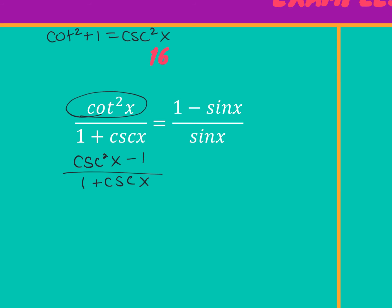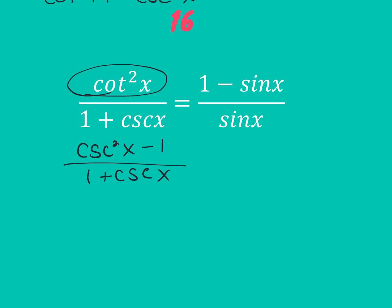Think about the top — it would be a difference of two squares, right? So could you factor it? How would it factor? Cosecant x minus one and cosecant x plus one. Good.